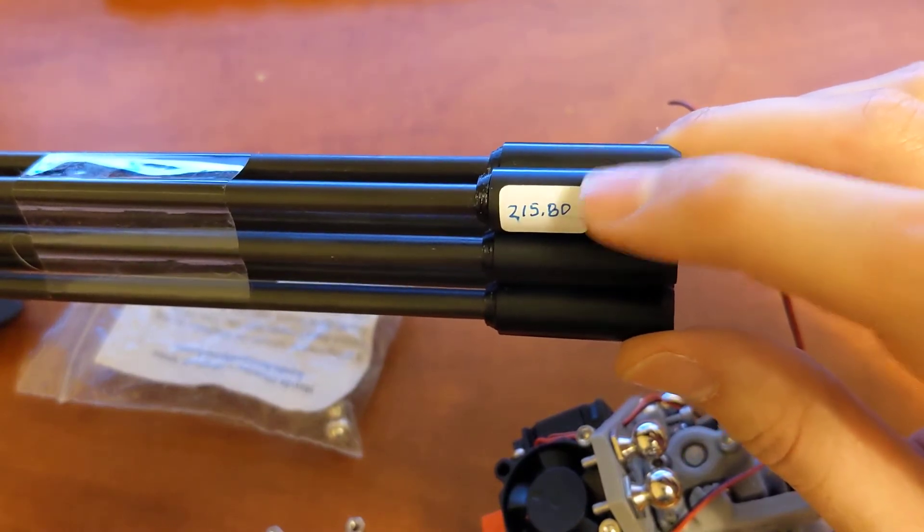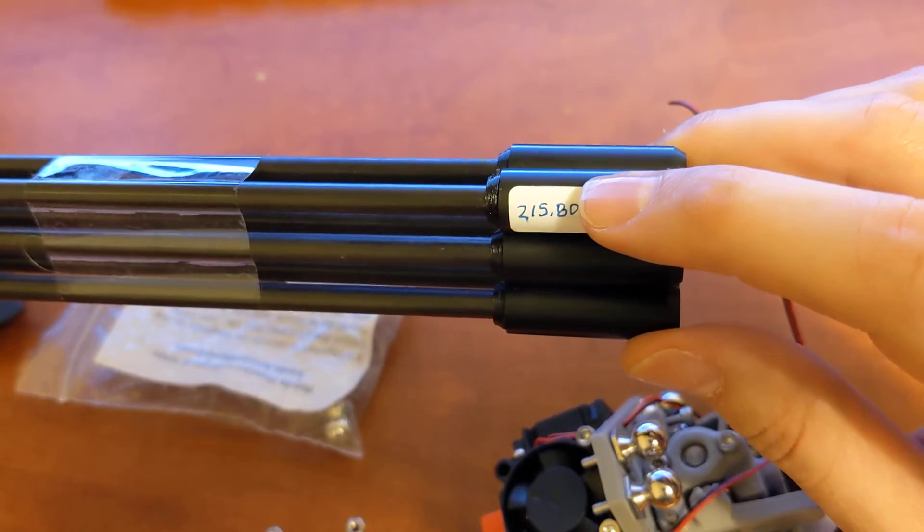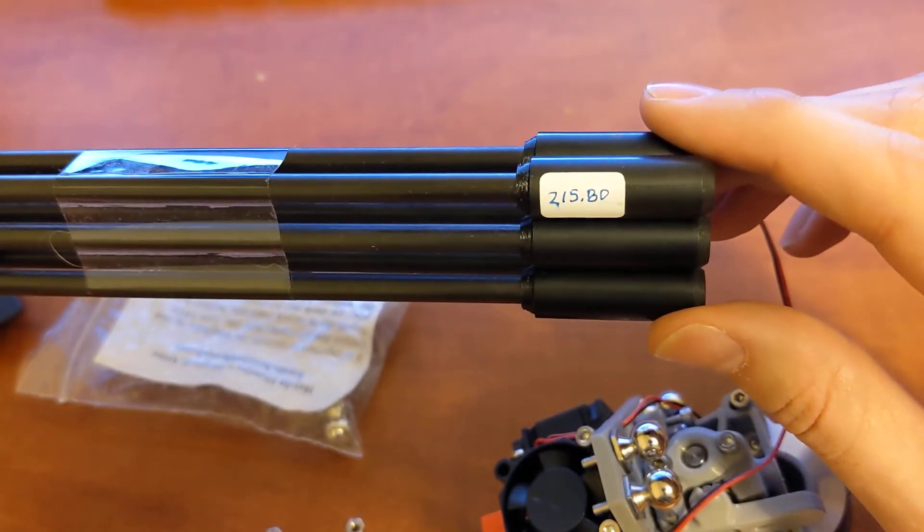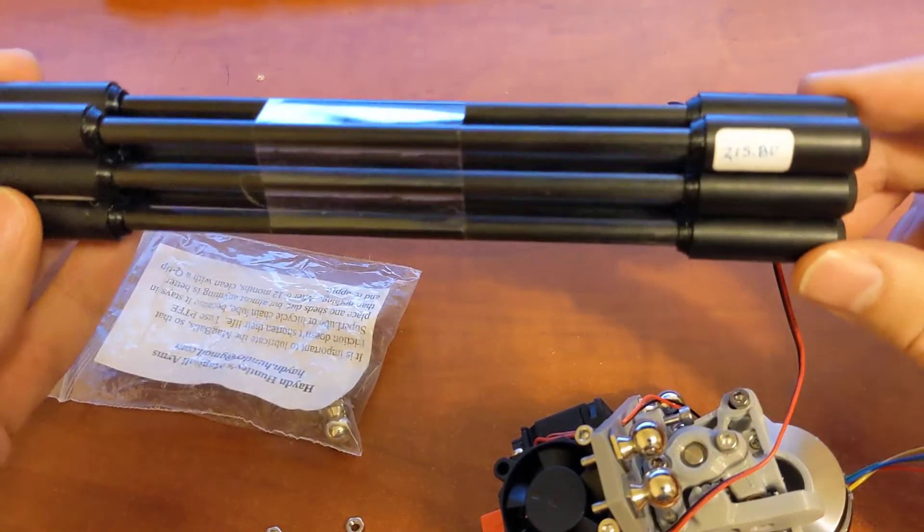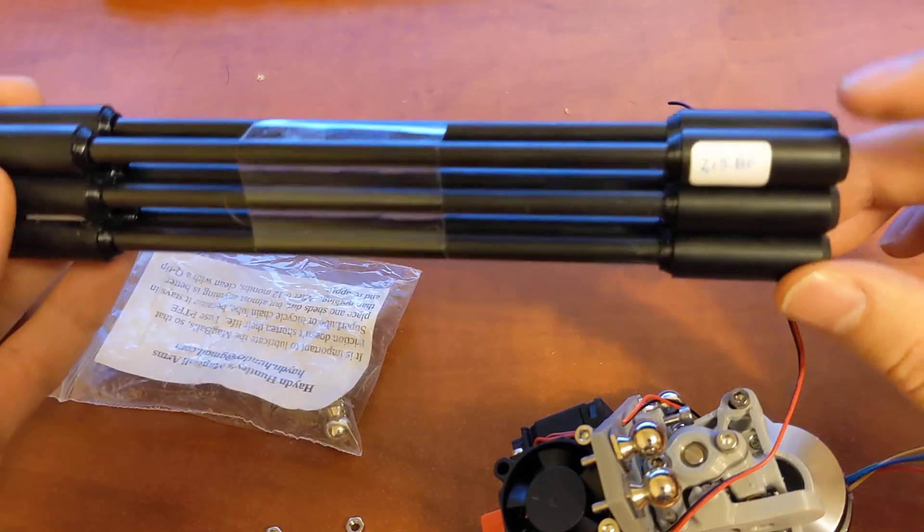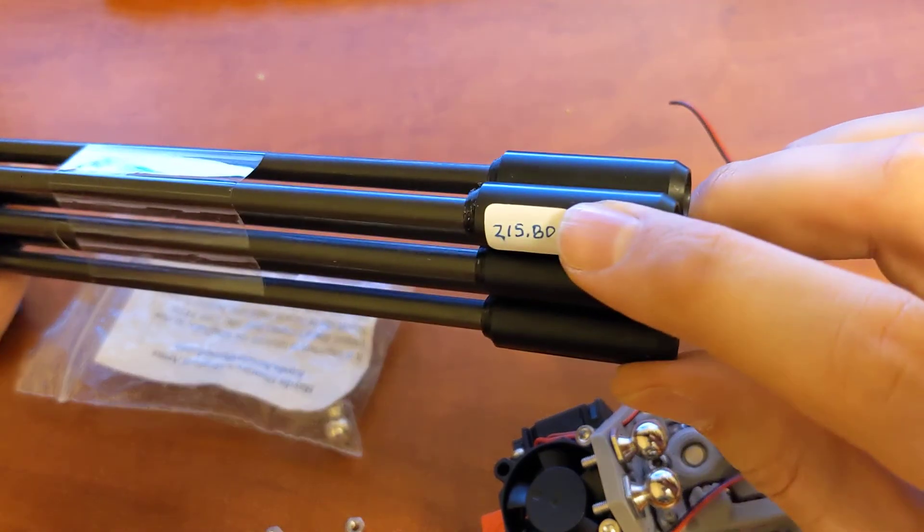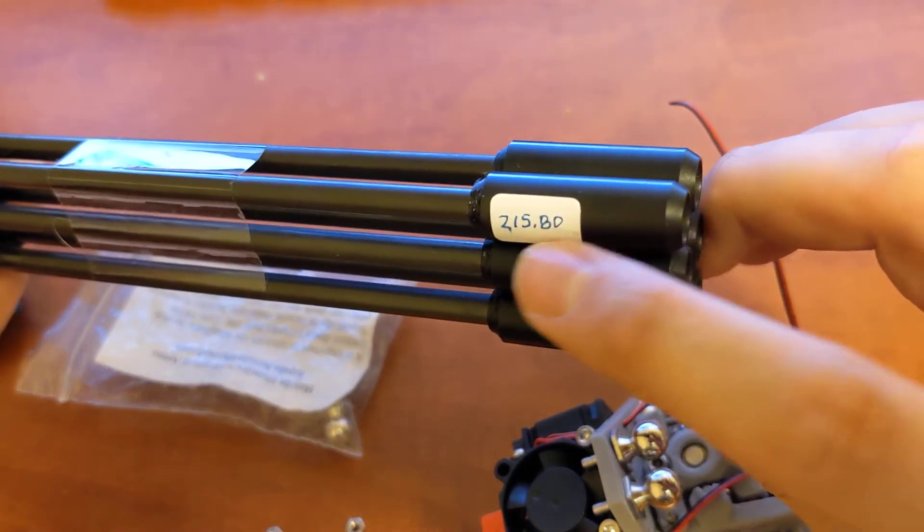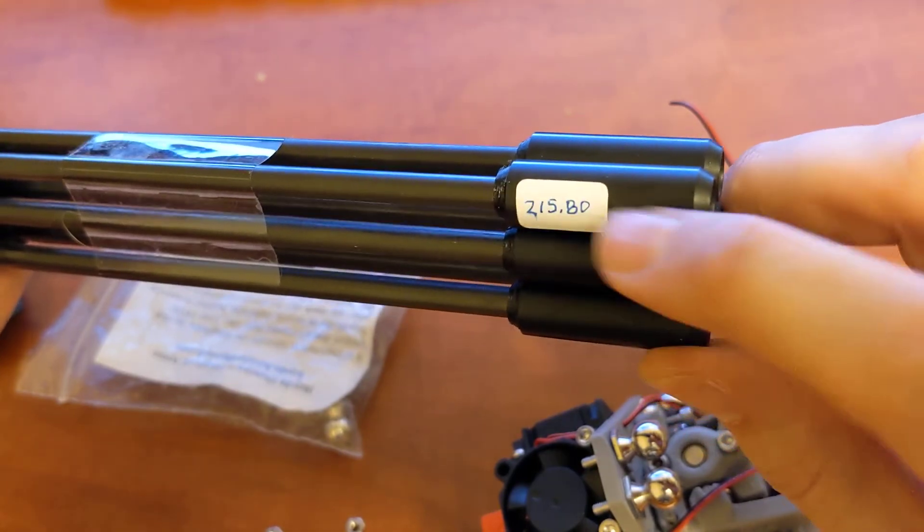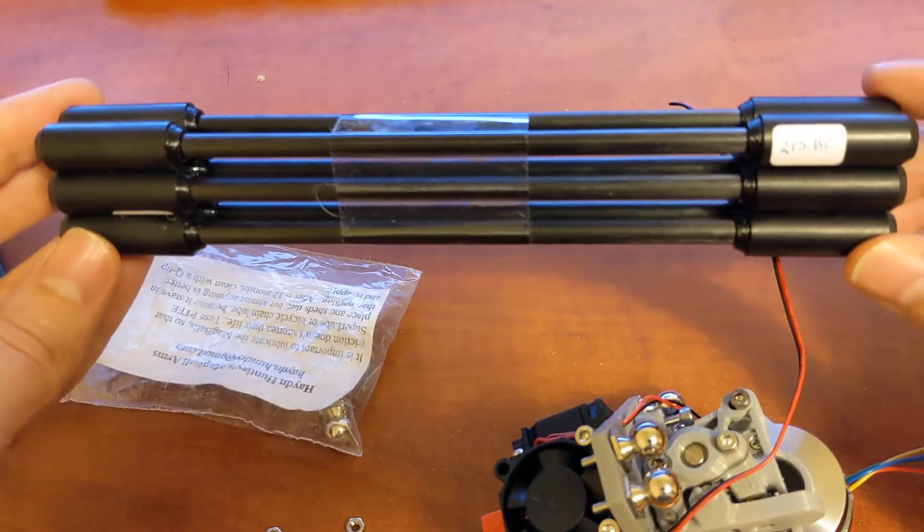The 0.8 here, like the precision is not super important. Klipper will calculate this on its own. It will figure out how long your arms are when we do the calibration, but it's really nice to see that. So in our Klipper config we can actually just put in 215 and it'll actually figure out the rest from there.